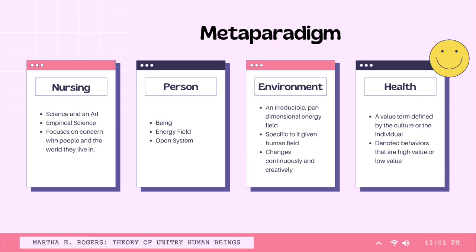The last metaparadigm, health, is defined by Rogers as a value term defined by the culture or the individual. Health and illness are manifestations of pattern and are considered to denote behaviors that are high value and low value (Rogers, 1980). Events manifested in the life process indicate the extent to which a human being achieves maximum health according to some value system.